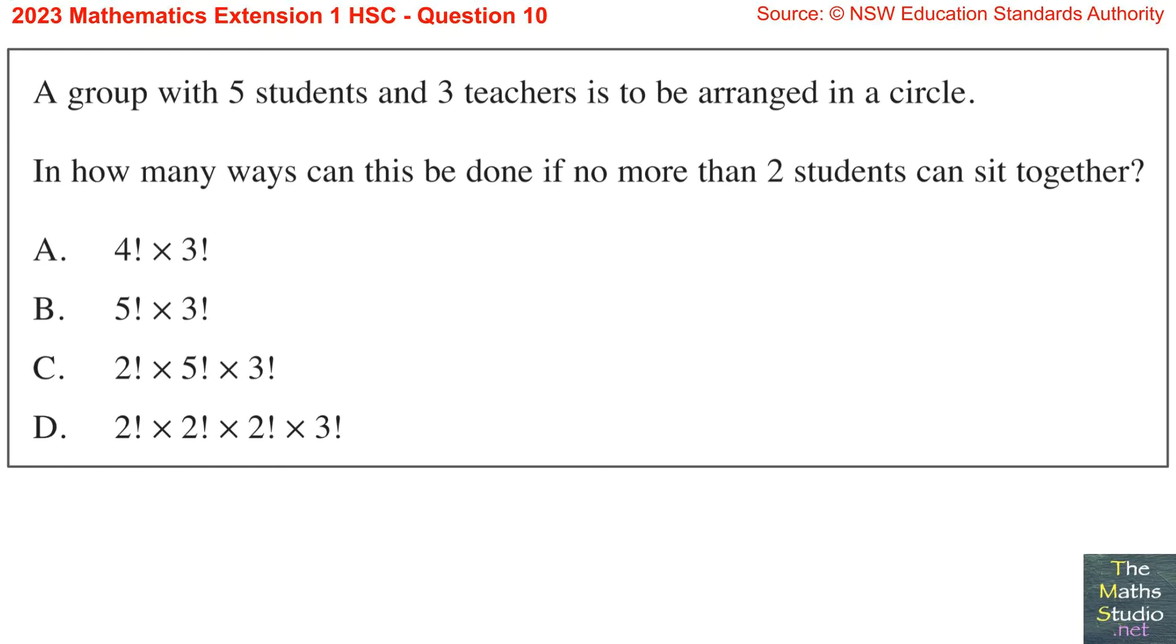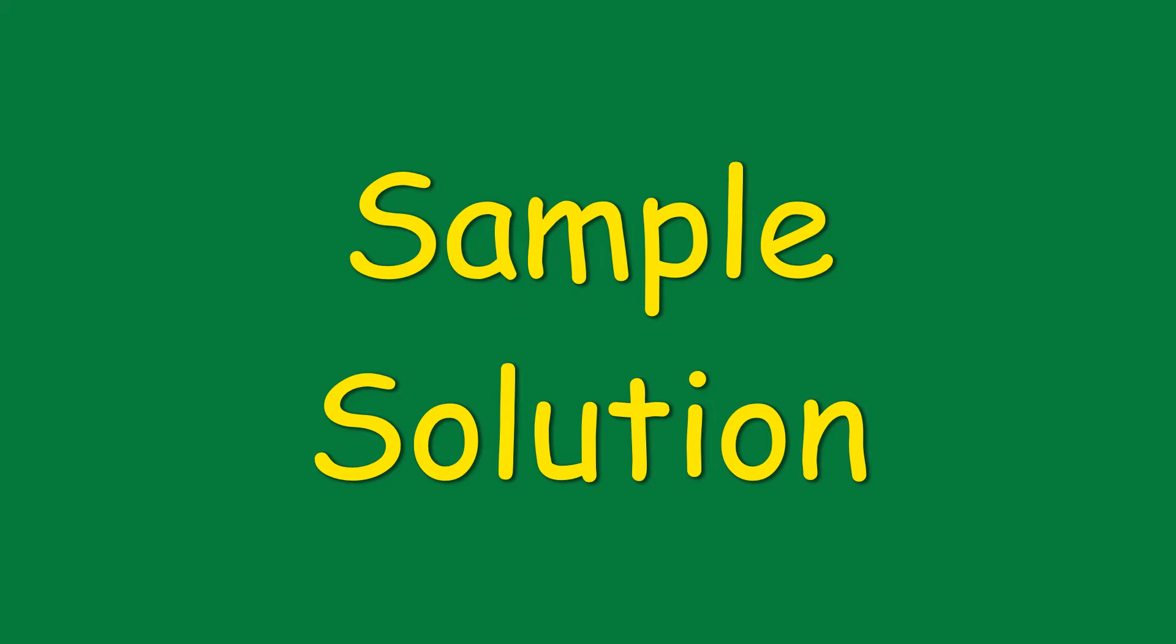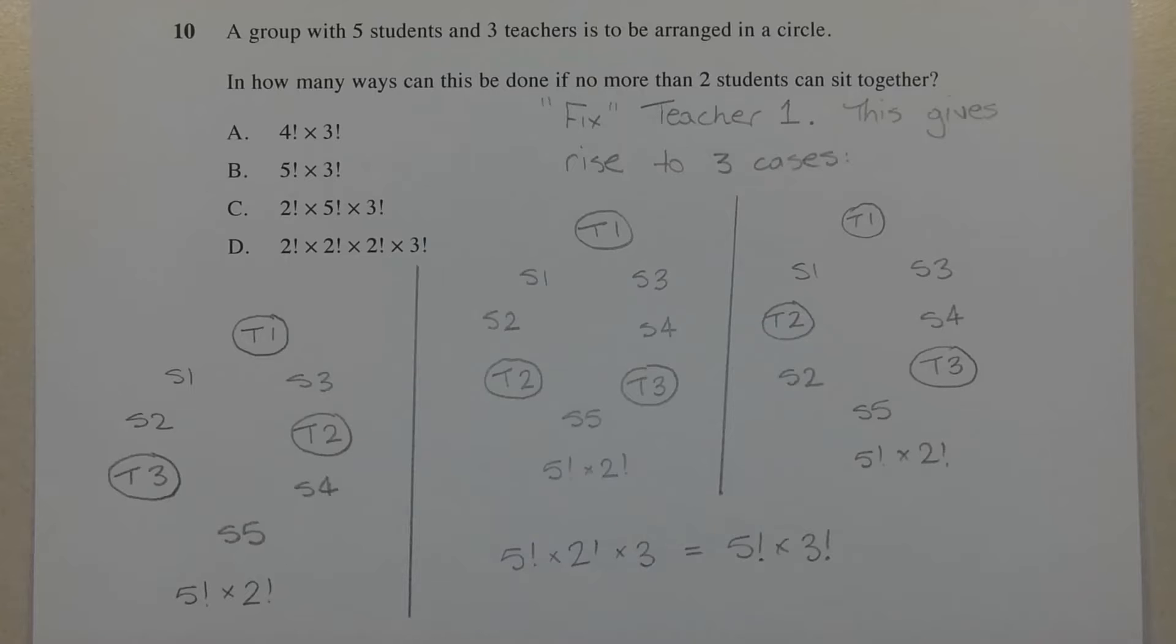Question 10: A group with 5 students and 3 teachers is to be arranged in a circle. In how many ways can this be done if no more than 2 students can sit together? There's multiple ways of going about this particular question.